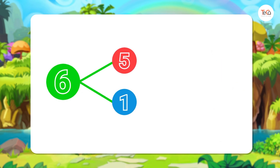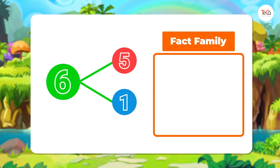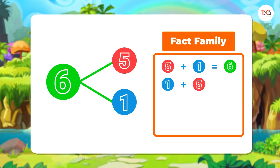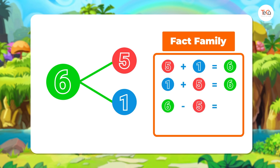First, for this number bond, we can write the fact family: 5 plus 1 equals 6, 1 plus 5 equals 6, 6 minus 5 equals 1, 6 minus 1 equals 5.